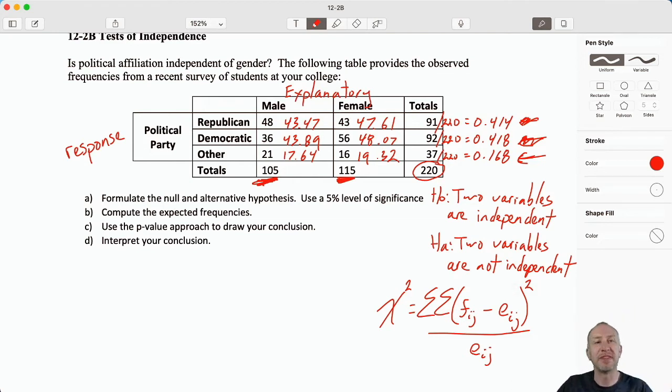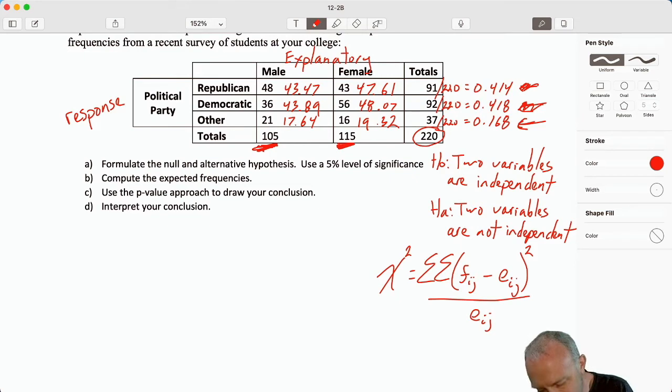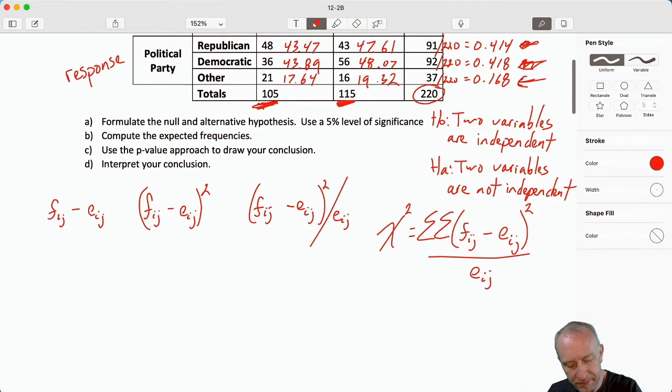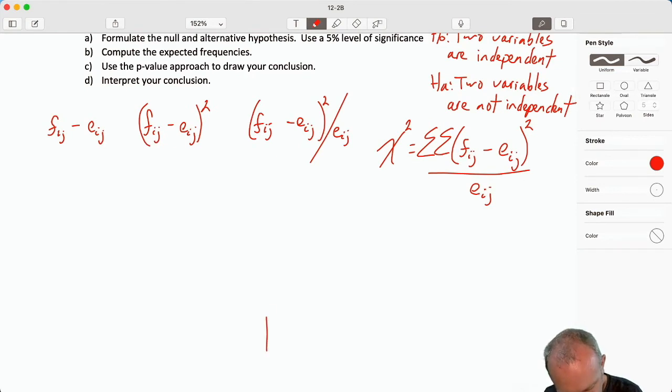So if the null is true and if they're independent, those are the values that we would expect. Those are the frequencies that we would expect to see. Now we go through the same exercise. We compare, we calculate those differences between observed and expected. We square those differences. We divide those differences by that expected value. And then somewhere down here we add all those up, and that gives us our chi-squared test statistic.